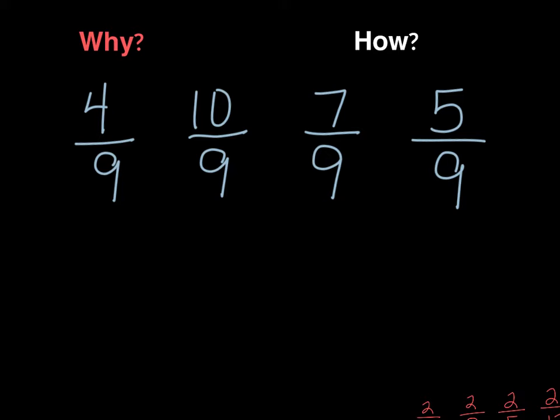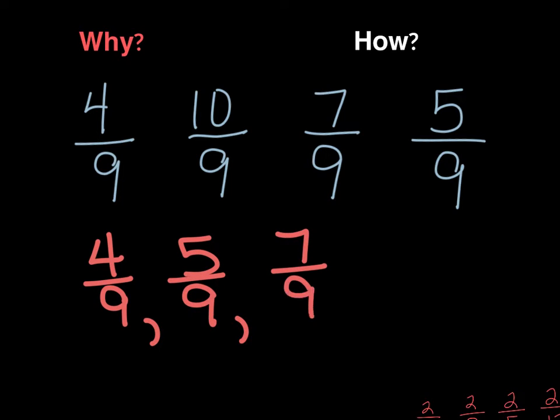So the only thing that I need to look at, if I'm going from least to greatest, I'm going to look for the smallest numerator in this set of fractions, which is going to be 4. And so 4 9ths would be my smallest, then 5 9ths, 7 9ths, and then 10 9ths.